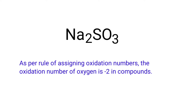As per the rule of assigning oxidation numbers, the oxidation number of oxygen is minus 2 in compounds. We can write the oxidation number of the element above its symbol and the total oxidation number of the atoms below its symbol.